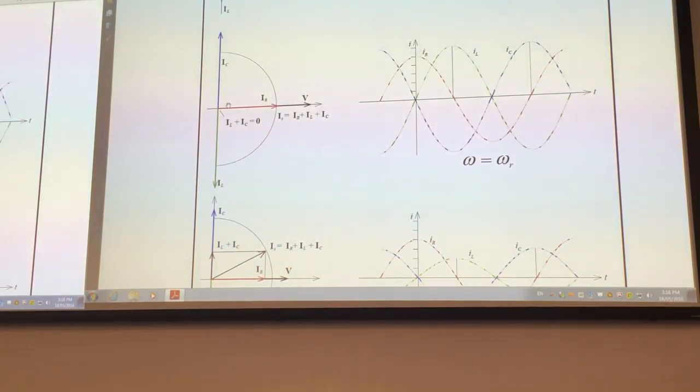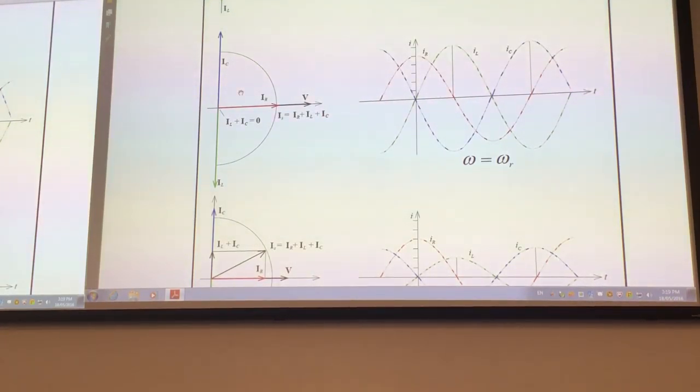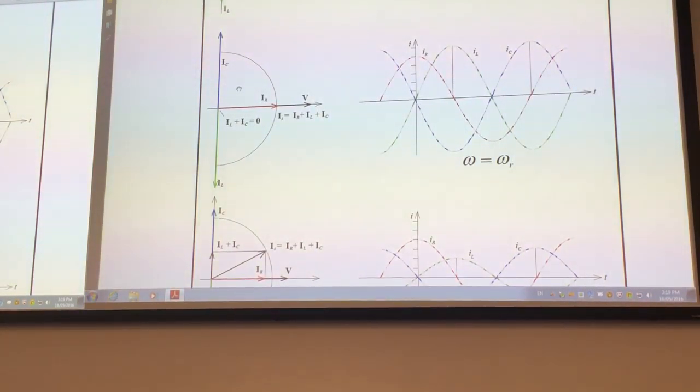Because we have two reactive components, one is inductive and the other is capacitive, they have opposite expressions for impedance, and they're both imaginary. For inductor and capacitor, if they have the same amplitude, they cancel. So they disappear, and IL plus IC becomes zero.